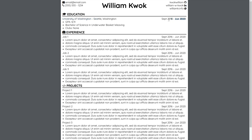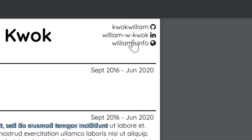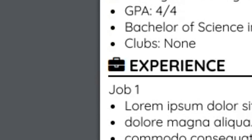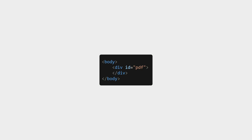Here are our requirements: the PDF must be highlightable and parseable by typical ATS software, the links must be clickable, it has to export icons or pictures included on it, and it must be able to use custom fonts. To start, we're going to create an empty HTML document with a div with the ID of 'pdf'.